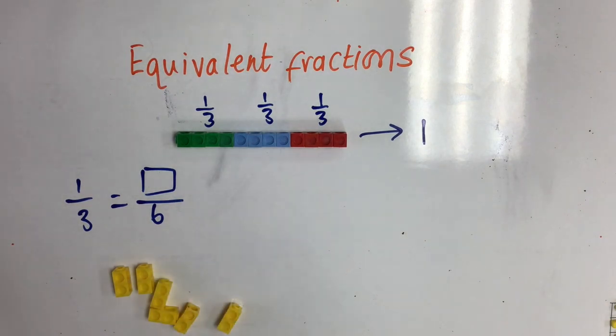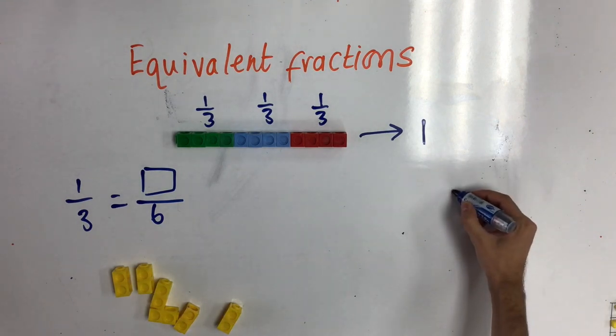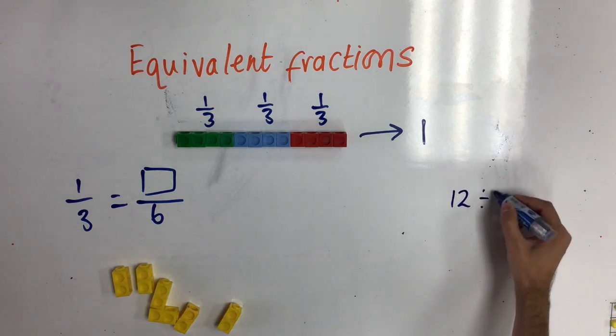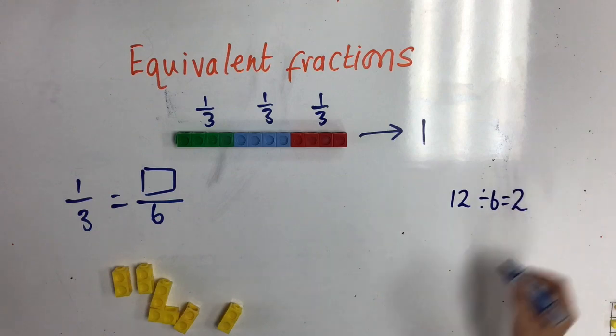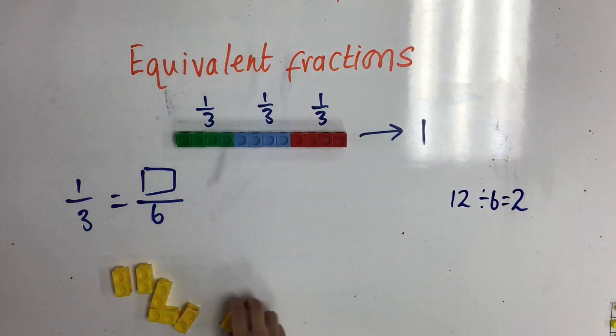I have twelve here, so I can do twelve divided by six to work out how many sixths one sixth is. I know that twelve divided by six is two, so two of my blocks can help me make one sixth.